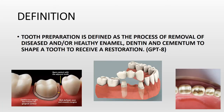Tooth preparation is defined as the process of removal of the diseased and/or healthy enamel, dentine, and cementum to shape a tooth to receive a restoration. So tooth preparation is removing the diseased part in case of caries, or the healthy enamel and dentine in the case of bridges where the abutments are healthy. You shape the tooth so that the restoration can sit on it. This definition is given by GPT-8.